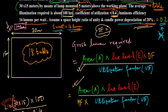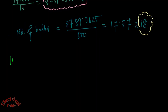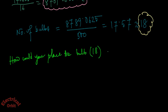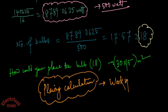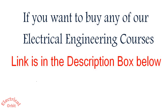Now my question to you is: how would you place these 18 bulbs in the 30 by 15 meter workspace? How would you calculate the distance or spacing between each bulb? Whenever you are placing bulbs you need to maintain certain gaps between them — how would you calculate that distance? Please mention your answer in the comment section below. If you have any doubts, mention them in the comments. If you want to buy any of our paid courses, the link is given in the description box below.